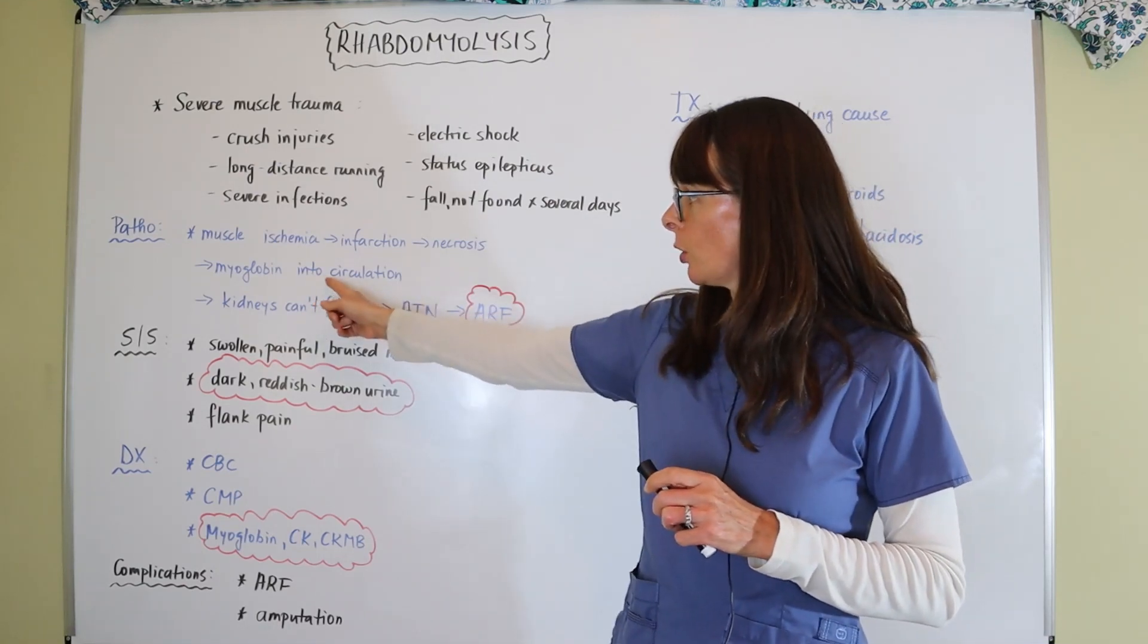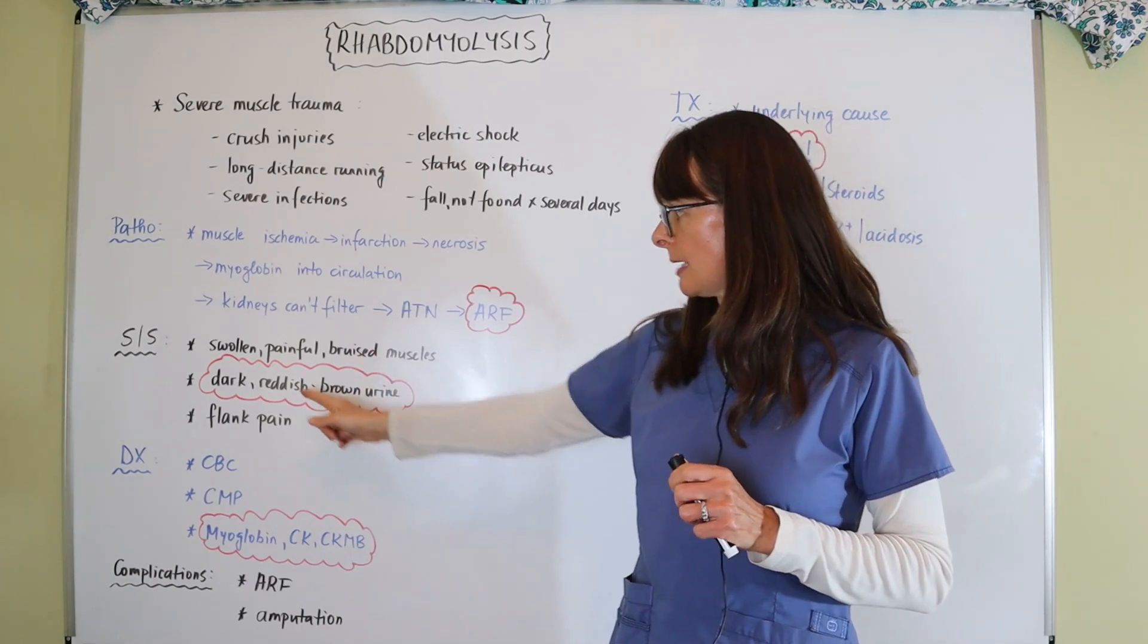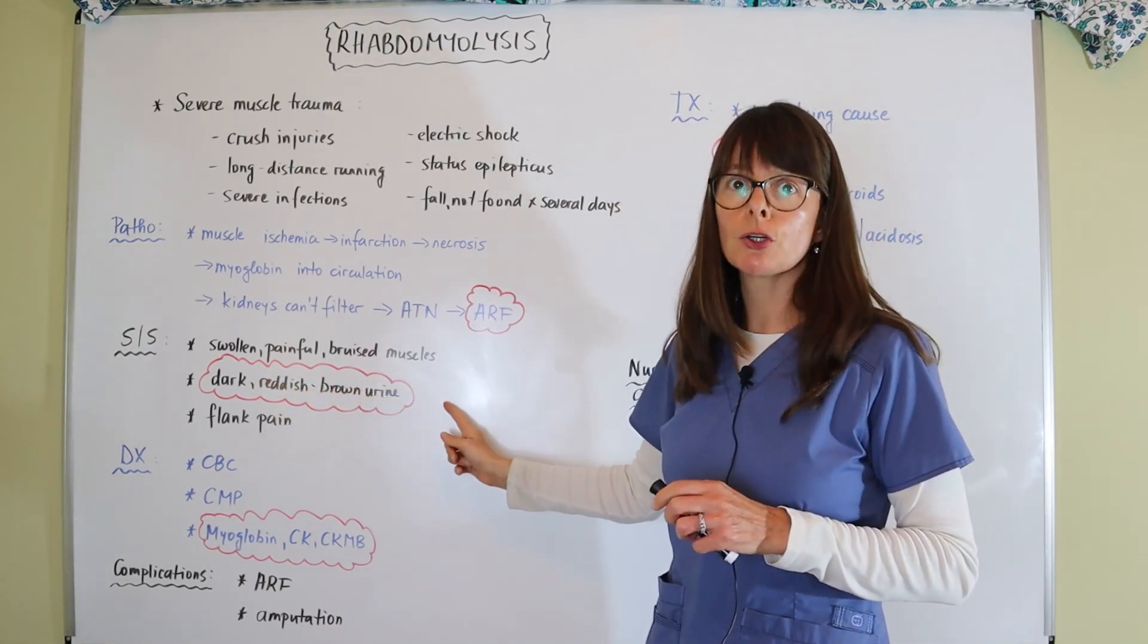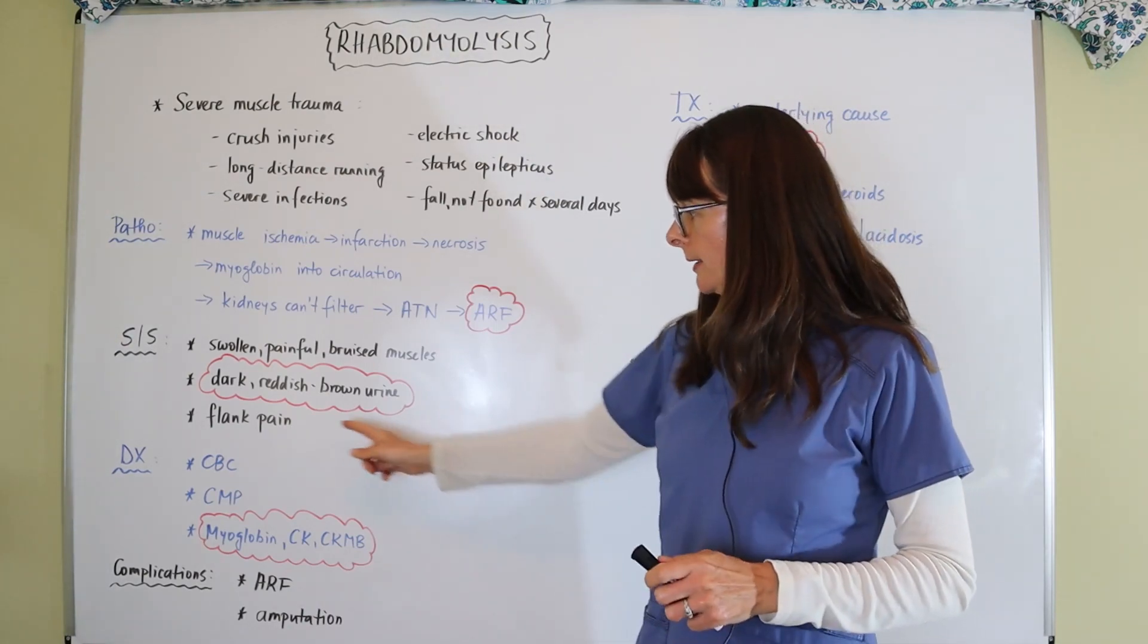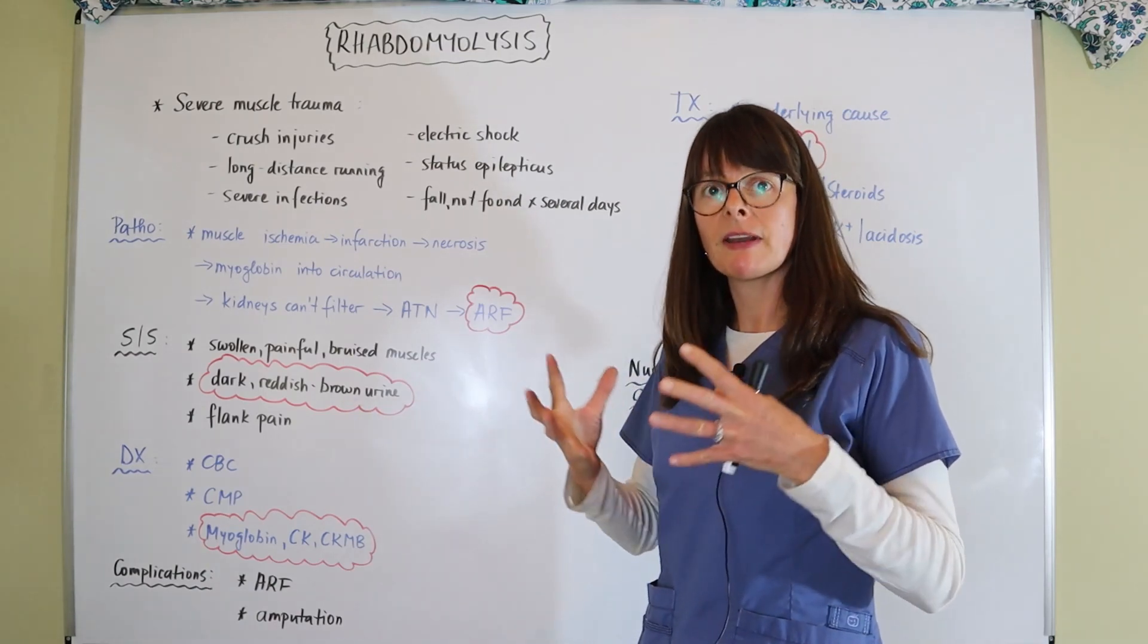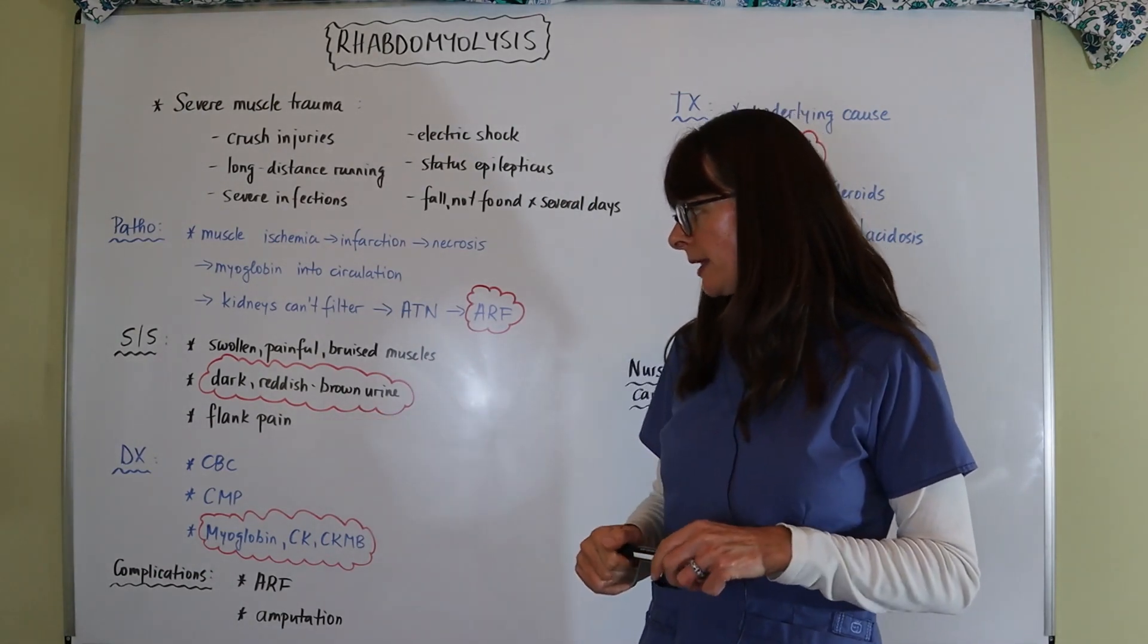With this myoglobin that's being released and that gets stuck in the kidney, it causes damage. Therefore we have dark and reddish brown discolored urine because of that myoglobin that's leaking through. The patient might also have some flank pain because the kidneys get inflamed and this acute renal failure can sometimes be evident by flank pain.